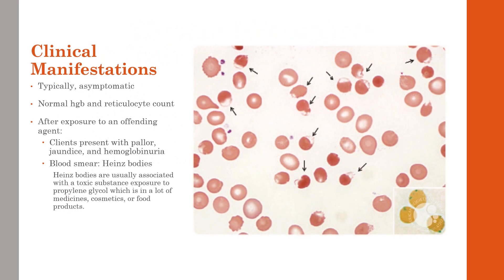Clinical manifestations: patients are typically asymptomatic until exposed to the substance that creates hemolysis. They may have a normal hemoglobin or reticulocyte count, but after exposure to an offending agent they'll present with pallor, jaundice, hemoglobinuria, and on blood smear we'll see Heinz bodies — usually associated with toxic substance exposure in many medicines, cosmetics, or food products.